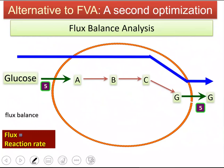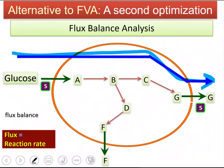The only way the secretion rate of G can have a value is to have a rate of 5 units. This will be the direction of carbon flow. But if this is my metabolic network and I don't have only G — B is having a branch here to produce F, and F is also secreted outside.